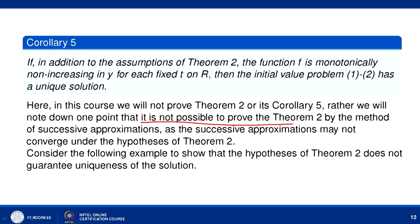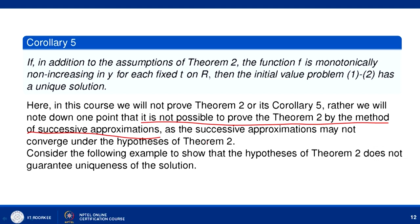We will not provide a proof of Theorem 2 or this corollary, as it requires some more advanced theory. We observe that it is not possible to prove Theorem 2 by the method of successive approximations. Here, successive approximations may not converge under the hypothesis of Theorem 2. We can look at the following example, which shows that the condition given in Theorem 2 is not sufficient to guarantee convergence of successive approximations.